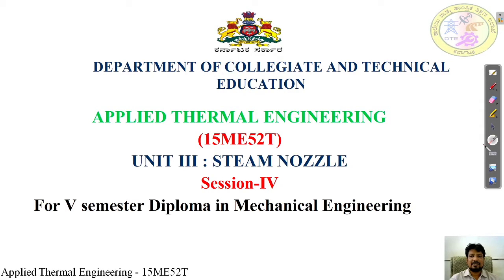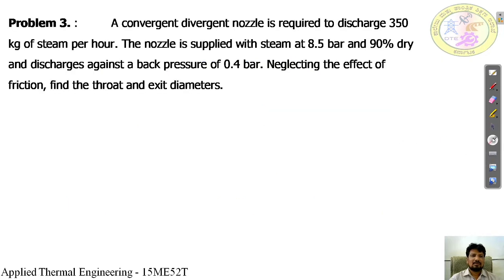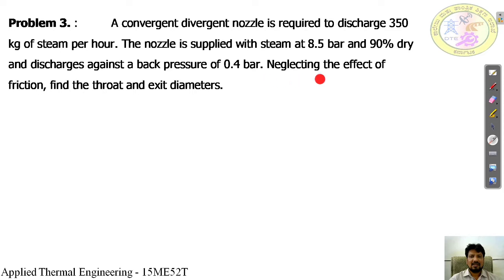Welcome to Department of Collegiate and Technical Education, Subject Applied Thermal Engineering, Unit 3rd, Steam Nozzle, Session 4, for 5th semester Diploma in Mechanical Engineering students. Now we will discuss a simple problem. The given problem is: a convergent-divergent nozzle is required to discharge 350 kg of steam per hour. The nozzle is supplied with steam at 8.5 bar and 90% dry, and discharges against a back pressure of 0.4 bar. Neglect the effect of friction; find the throat and exit diameter.